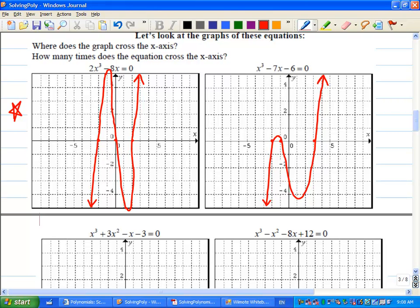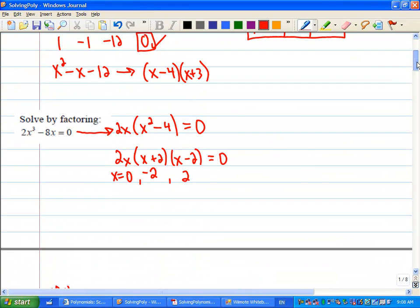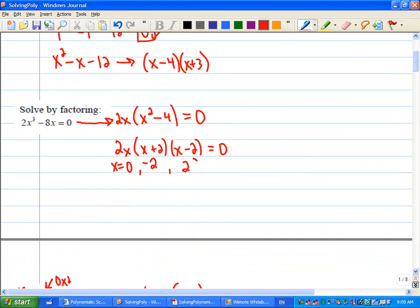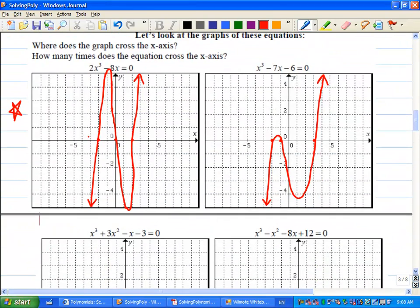But what do you notice about where it crosses the x-axis compared to the algebra that you did? Can you connect your algebra to the picture? The x-axis, the number equals to the x. Okay, so let's go back up. This is one of them that we did. So here's the first graph. Those are the values of x: 0, negative 2, and 2. And those are the values here: negative 2, 0, and 2 for x.